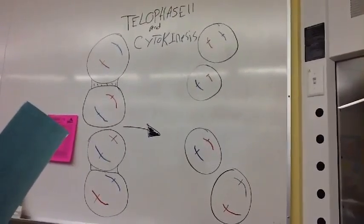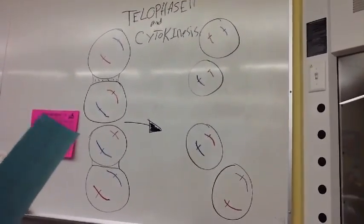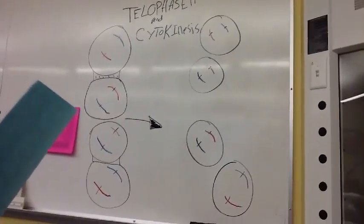In cytokinesis, the two daughter cells are separated. This is the outcome of meiosis II.